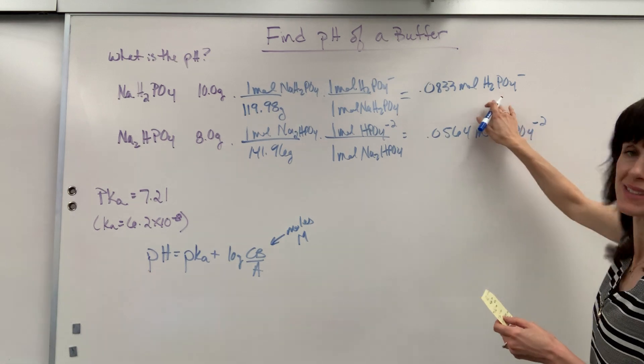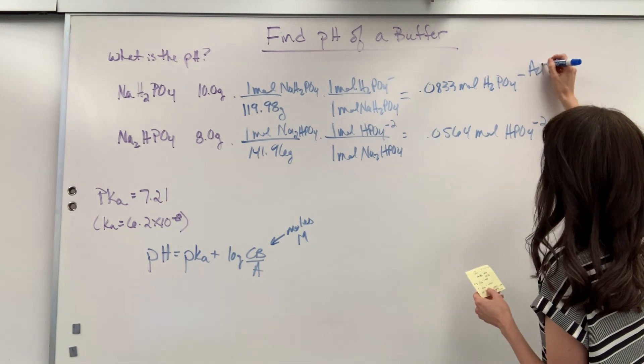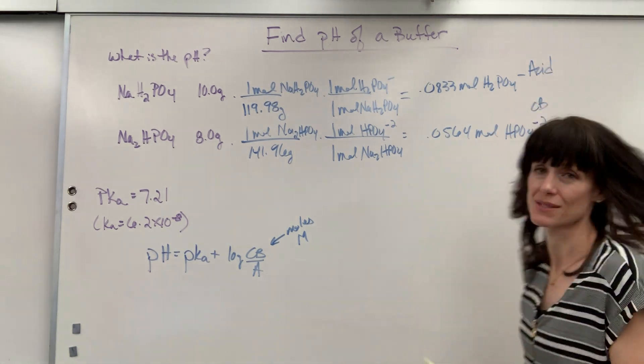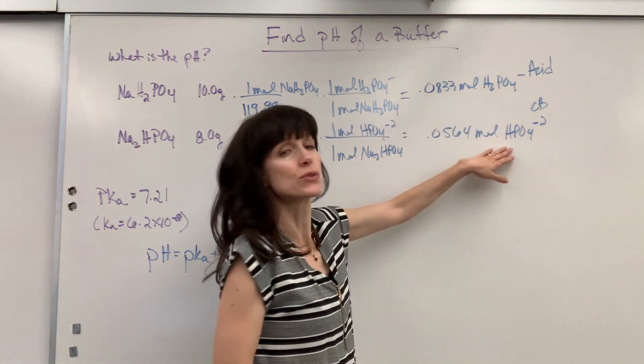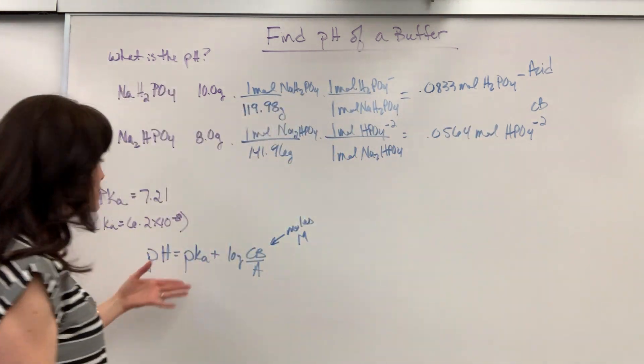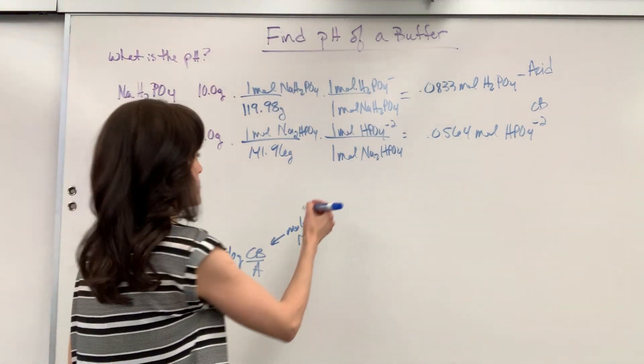Now remember this is the acid and this is the conjugate base right there because the acid is going to donate, the base is going to accept. Now I can just plug everything into Henderson-Hasselbalch and find pH.